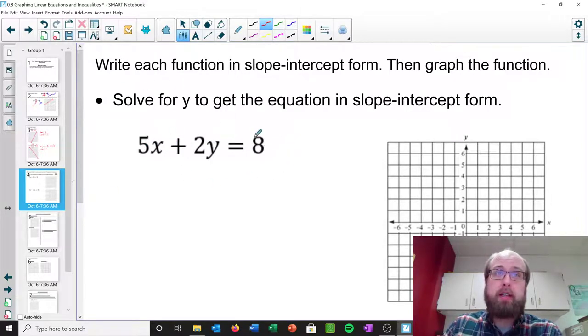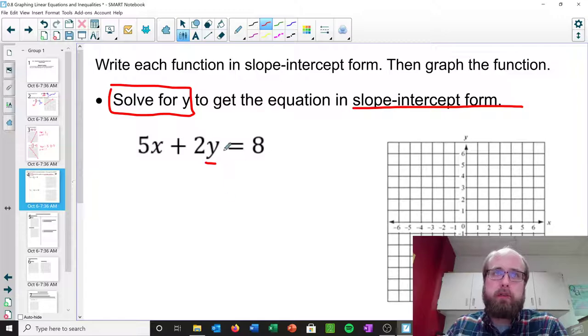what we call standard form. And it looks like this. 5x plus 2y equals 8. If that's the case, where you're given something like this, basically all you want to do is solve for y. In other words, get y alone to get this equation in slope-intercept form. So if I get y alone here, then I'll have it in slope-intercept form.